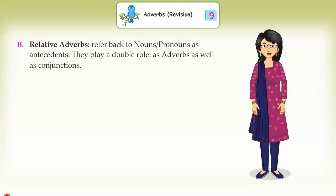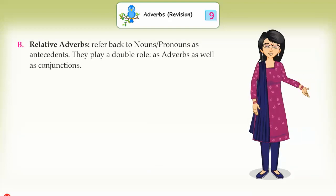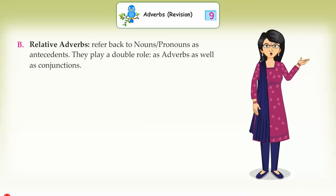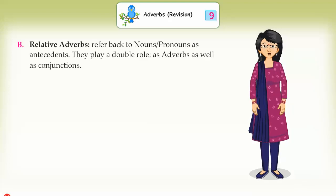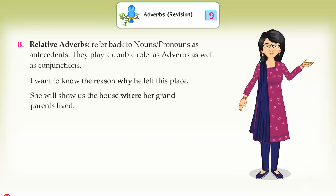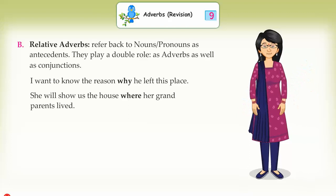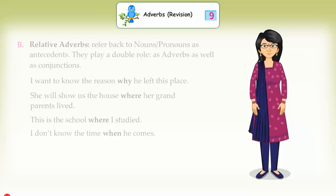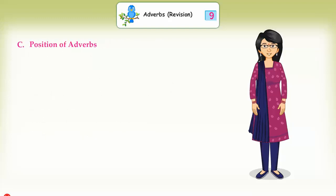B8: Relative adverbs refer back to nouns or pronouns as antecedents. They play a double role — as adverbs as well as conjunctions. Examples: I want to know the reason why he left this place. She will show us the house where her grandparents lived. This is the school where I studied. I don't know the time when he comes.